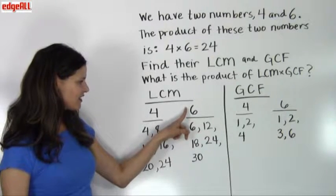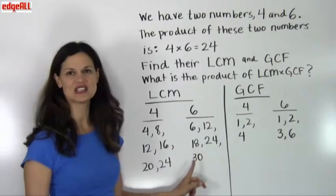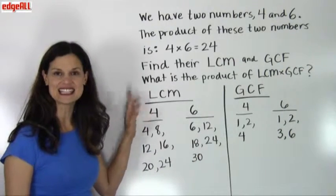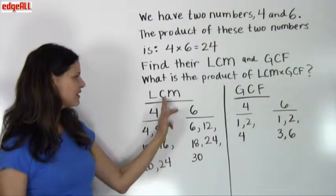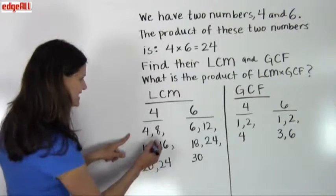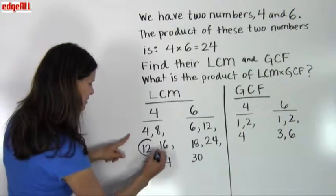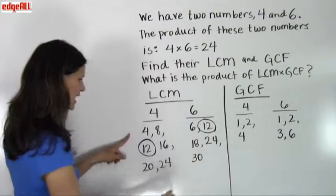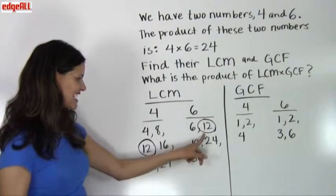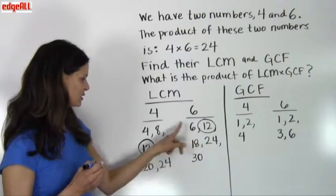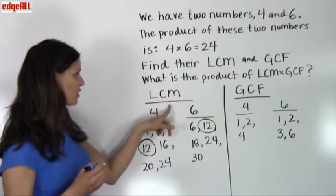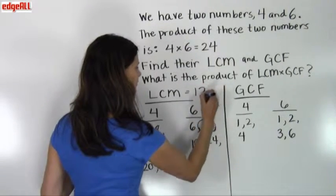We have in our multiples of 6: 6, 12, 18, 24, 30, and we want to find the least — the smallest number — that's common to both lists of multiples. I can see that I have the number 12 in both of my lists. This is the least number that's common to both; there's no number smaller than 12 that's common to both lists. So my least common multiple is 12.